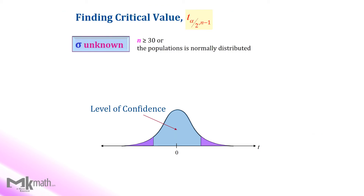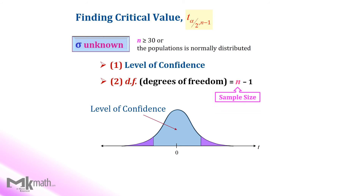In summary, we need to identify the confidence level and the degrees of freedom to look up the t-table. Please make sure to state both positive and negative critical values, since our t-table only gives positive t-scores. Thank you for watching and see you again.